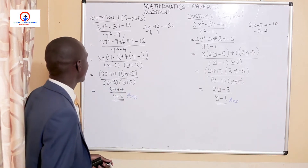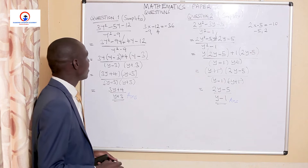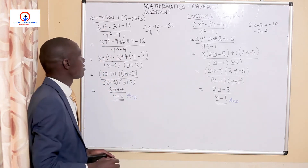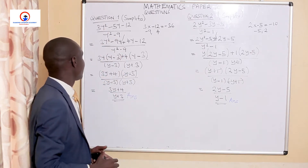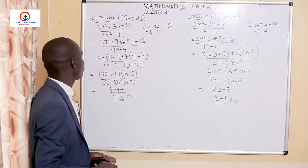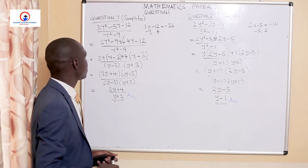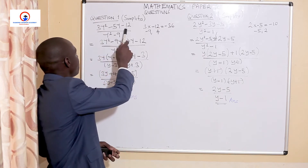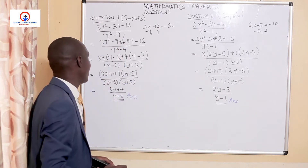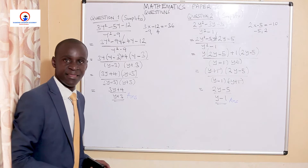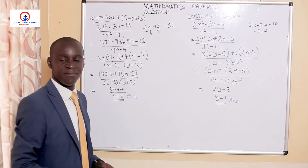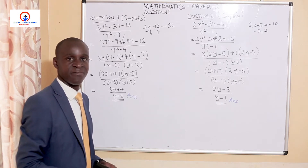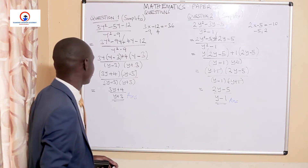Here's a question coming from the examination questions. Question 1 is saying: simplify 3y squared minus y minus 12 over y squared minus 9. I've discovered that these questions have been giving students a lot of challenges, and we decided today to make things very easy for each and every one of us.